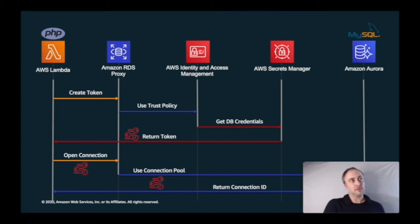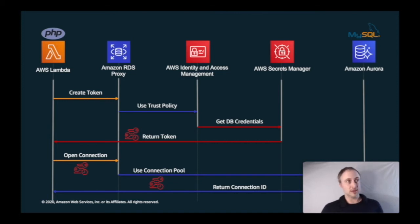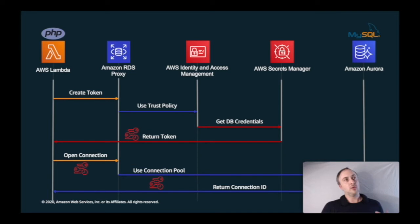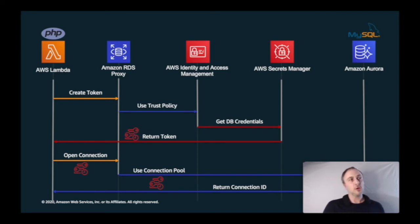To connect to Amazon Aurora from a Lambda function using RDS Proxy, there's a token exchange: AWS Lambda uses a trust policy to grab credentials from Secrets Manager, which returns a token that it then uses on RDS Proxy to connect to the database pool.